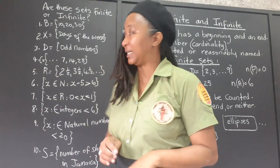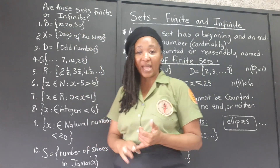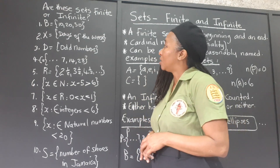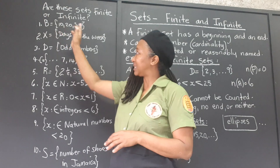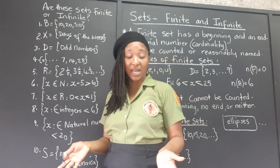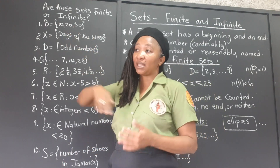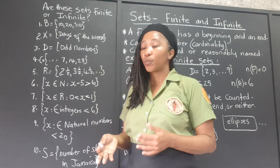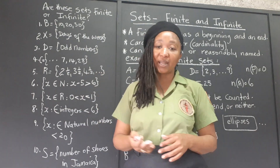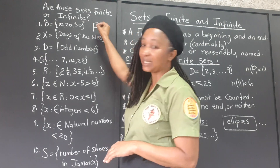Now we're going to look at some examples and determine whether each set is finite or infinite. Set B contains the numbers 10, 20, 30 — three elements, and there's no indication in either direction that the set continues. It definitely has a first element and a last element, with a cardinality of three. This is definitely a finite set.